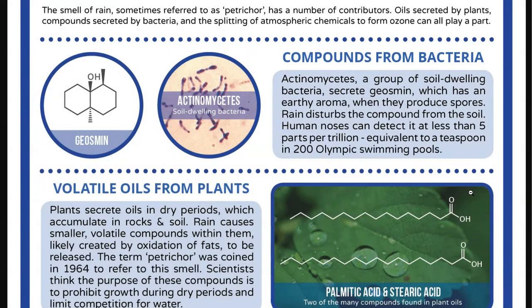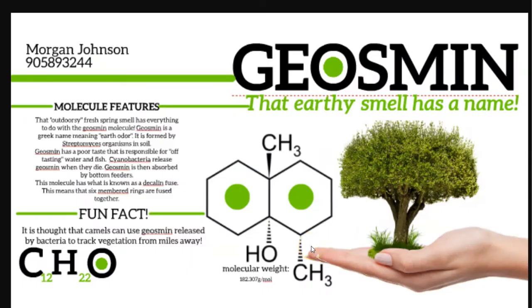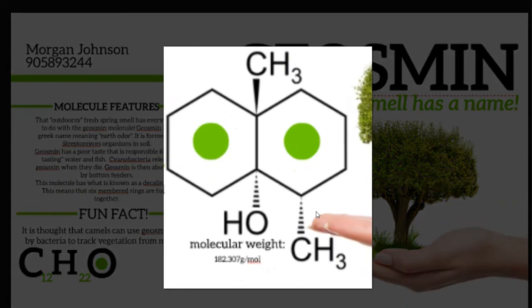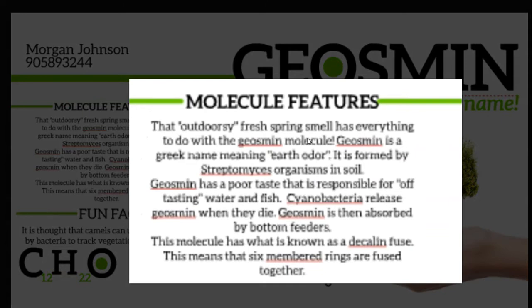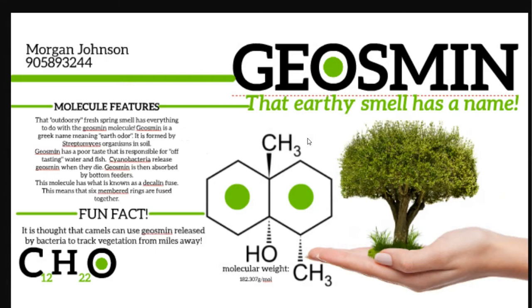Human gnosis can detect Geosmin at less than 5 parts per trillion. Thus, the presence of a small percentage of Geosmin in the soil can be easily sensed by humans. This is the structure of Geosmin — it is the one which gives a fresh spring smell. In other words, Geosmin is a Greek name meaning earthy odor. It is mainly formed due to the presence of Streptomyces-like organisms in the soil. This Geosmin is also responsible for a poor taste and off-flavor in water as well as fishes in the environment.